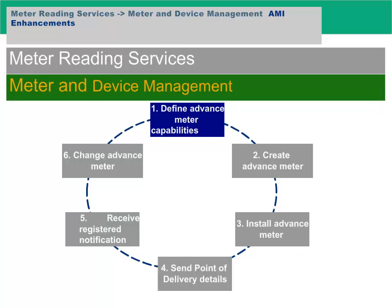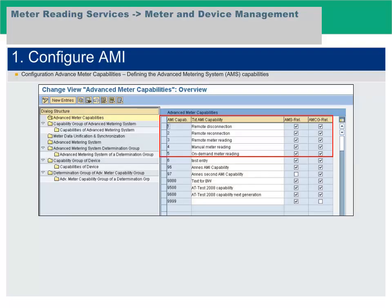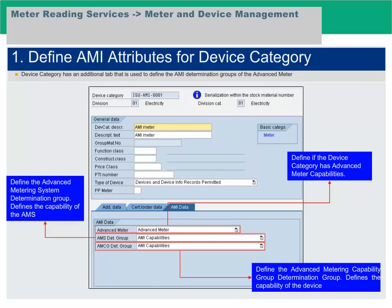Let us start with advanced metering capabilities. This slide shows configuration required for AMI. Please refer to the AMI configuration guide for more details. This slide shows various new fields related to AMI activation. 'Advanced meter' defines if the device category has advanced meter capabilities. 'AMSD group' defines the advanced metering system determination group and the capability of the AMS. 'AMCGD group' defines the advanced metering capability group determination group and the capability of the device.